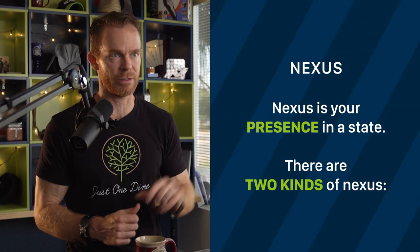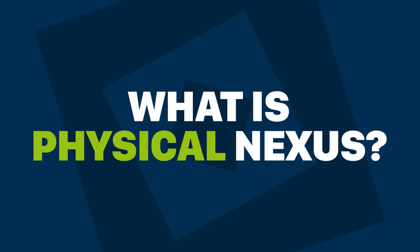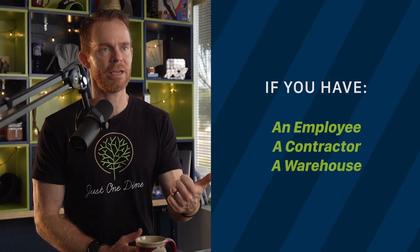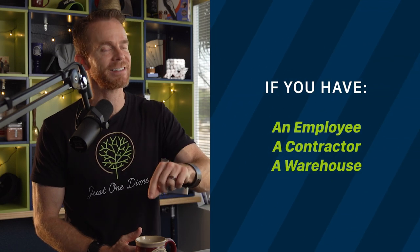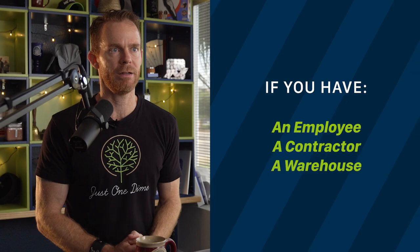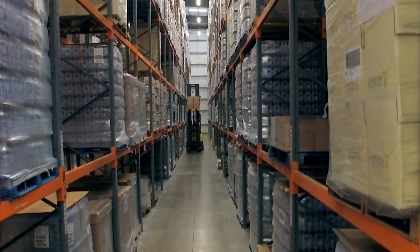Nexus is just a fancy word for presence in a state, and there are two kinds: physical and economic. So you can have a physical presence in a state and also have an economic presence in a state. What is physical nexus? If you have an employee, a contractor, or a warehouse, then you have physical nexus in that state. If your products are stored in an Amazon fulfillment center in that state, that also counts as physical nexus.